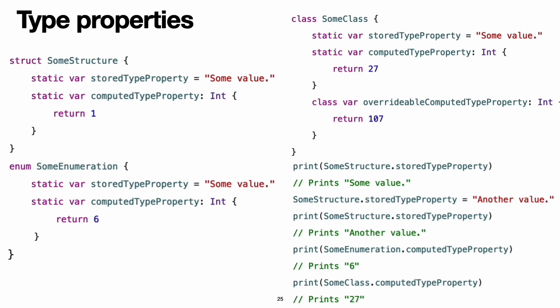Note: unlike stored instance properties, you must always give stored type properties a default value. This is because the type itself does not have an initializer that can assign a value to a stored type property at initialization time. Stored type properties are lazily initialized on their first access. They are guaranteed to be initialized only once, even when accessed by multiple threads simultaneously, and they do not need to be marked with the lazy modifier.